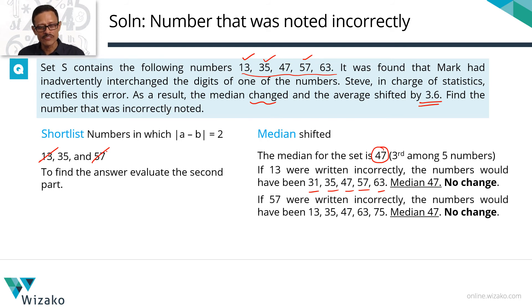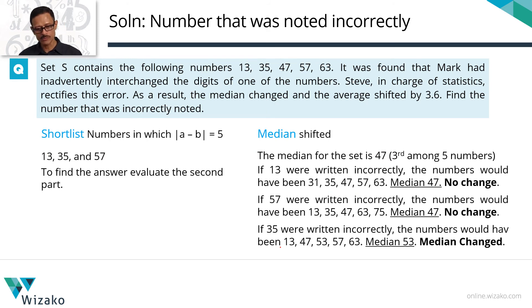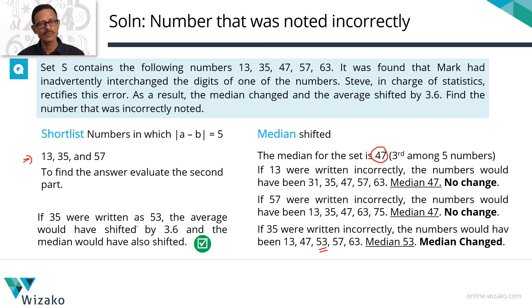So obviously that leaves us with 35. Let's verify with 35. If 35 was noted down incorrectly, he would have written this 35 as 53. So what will be the ascending order of numbers? It's going to be 13, 47, 53, 57, 63. What is the median right now? The median is 53. What was the initial median? The initial median was 47. Did the median change? Yes. The median also changed. Did the average shift? Yes. Obviously we shortlisted these numbers by taking this average shift of 3.6. So the number that was noted incorrectly by this guy is basically 35. 35 was written as 53. Average shifted by 3.6 and so did the median also shift.